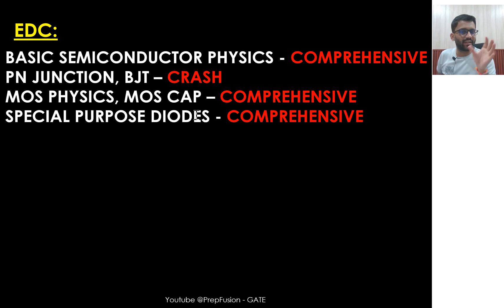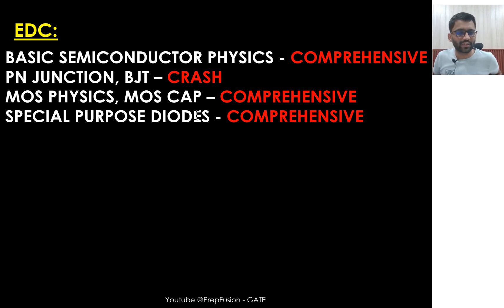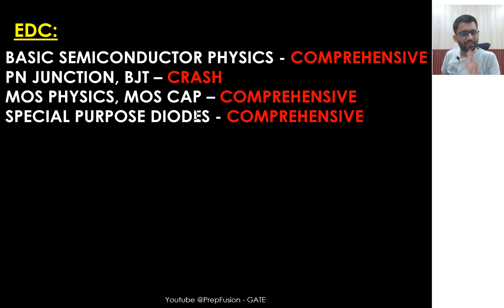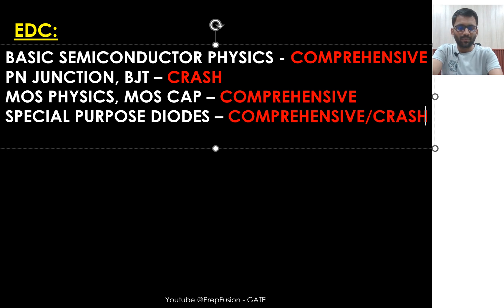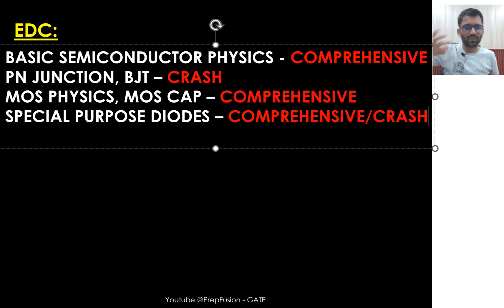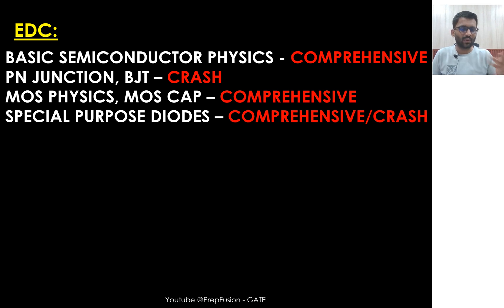In EDC: basic semiconductor physics should be done from the comprehensive course. PN junction and BJT can be done from the crash course. MOSFET physics and MOS capacitor should be done comprehensively. Special purpose diodes are a very small topic and can be studied from either crash or comprehensive — the content is essentially the same, so you can find videos on YouTube as well.